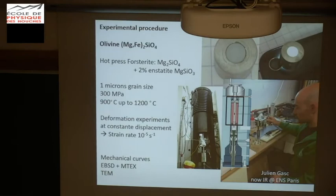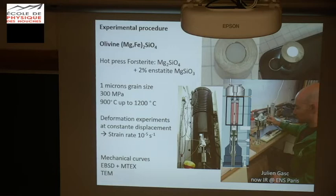So let's go back to the lab. My olivine, but without the iron, is called forsterite. We add a little bit of a broader mineral called enstatite, which is a little bit enriched in silica, to buffer the silica activity and not generate too many vacancies. It's very small grains — small in my world means microns. We're going to deform those hot-pressed dense forsterite aggregates under a confining pressure of 300 MPa and temperatures between 900°C and 1200°C.